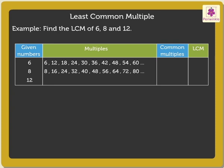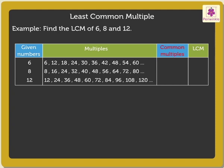The multiples of 12 are 12, 24, 36, 48, 60, 72, 84, 96, 108, 120 and so on. Here, the common multiples of 6, 8 and 12 are 24, 48 and so on. Thus, LCM is 24.